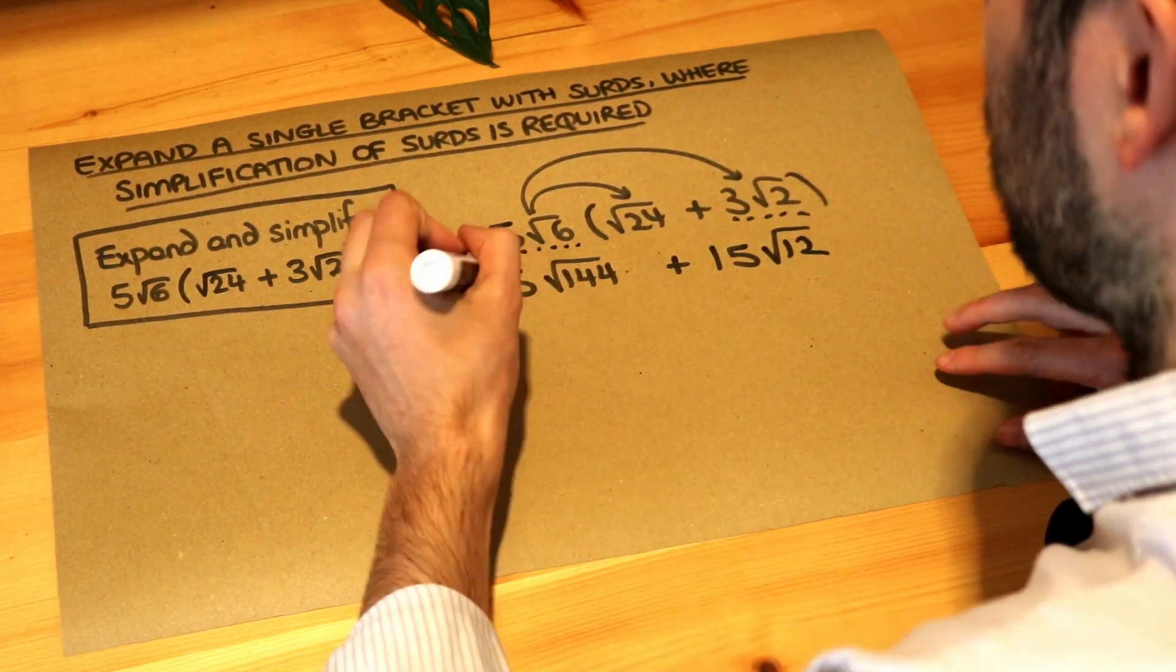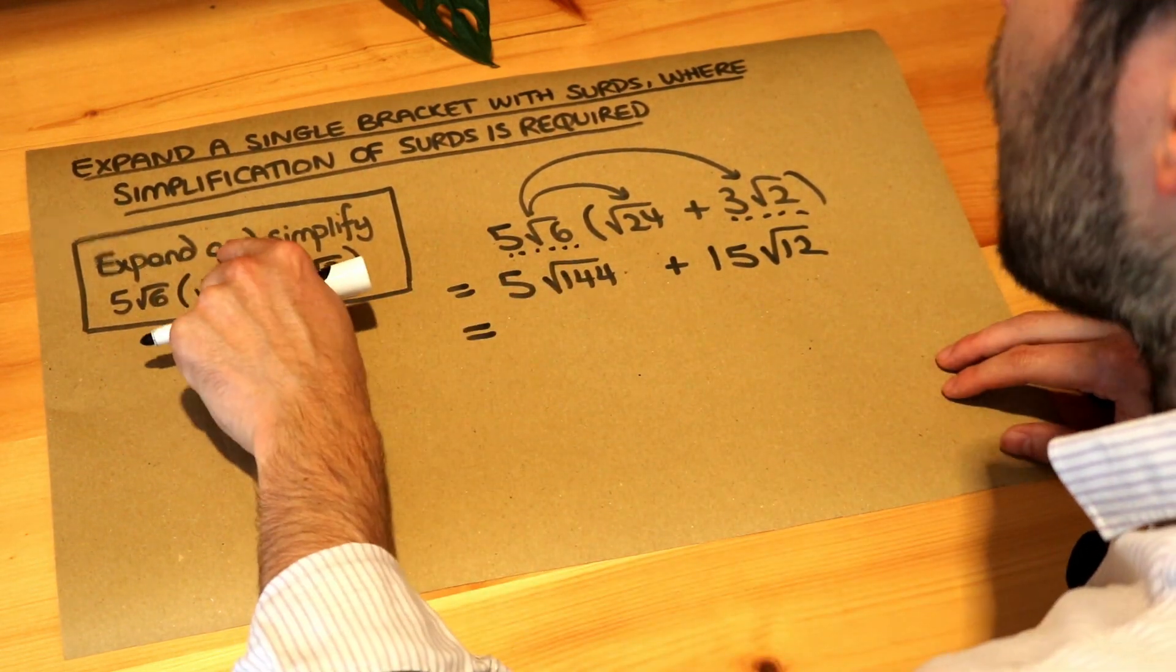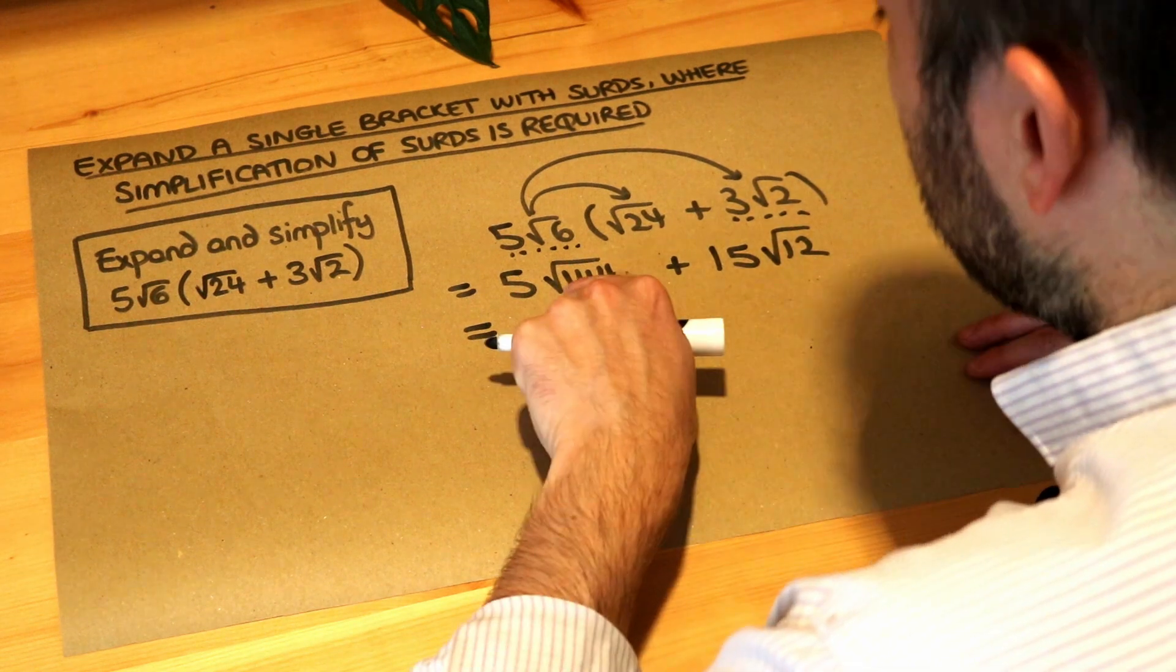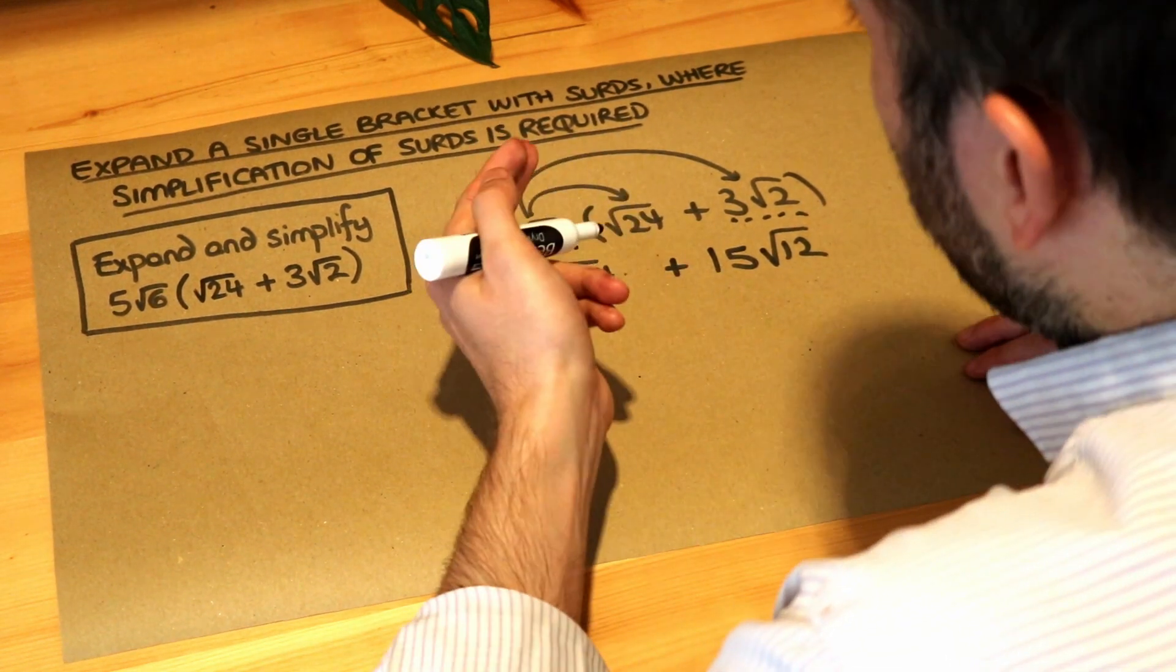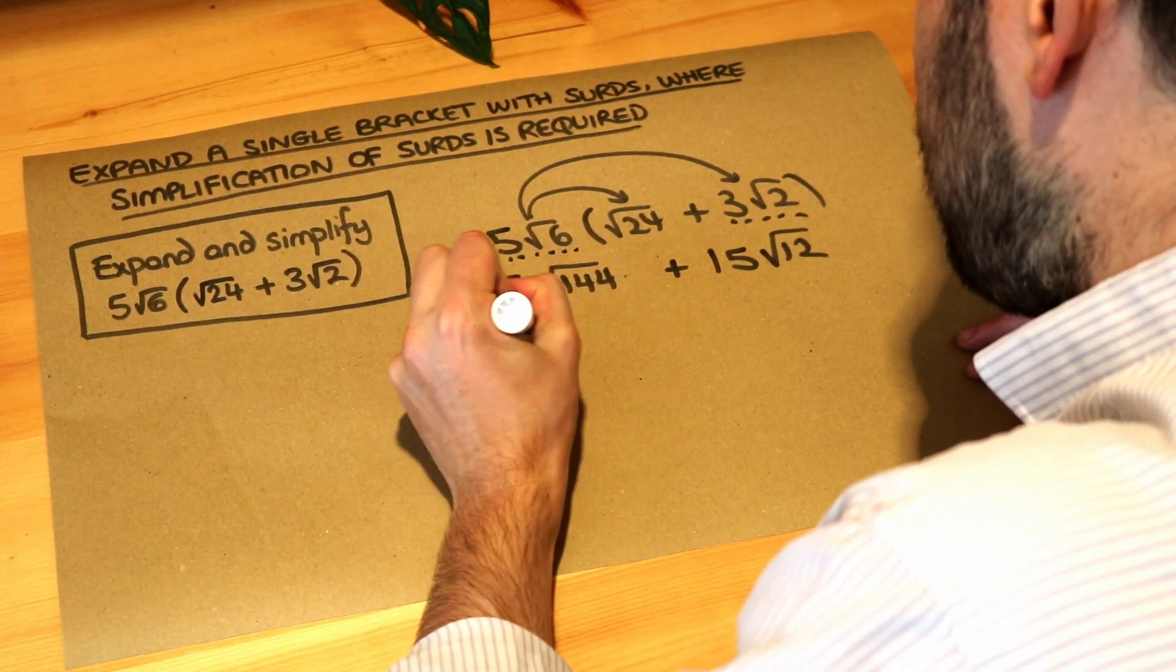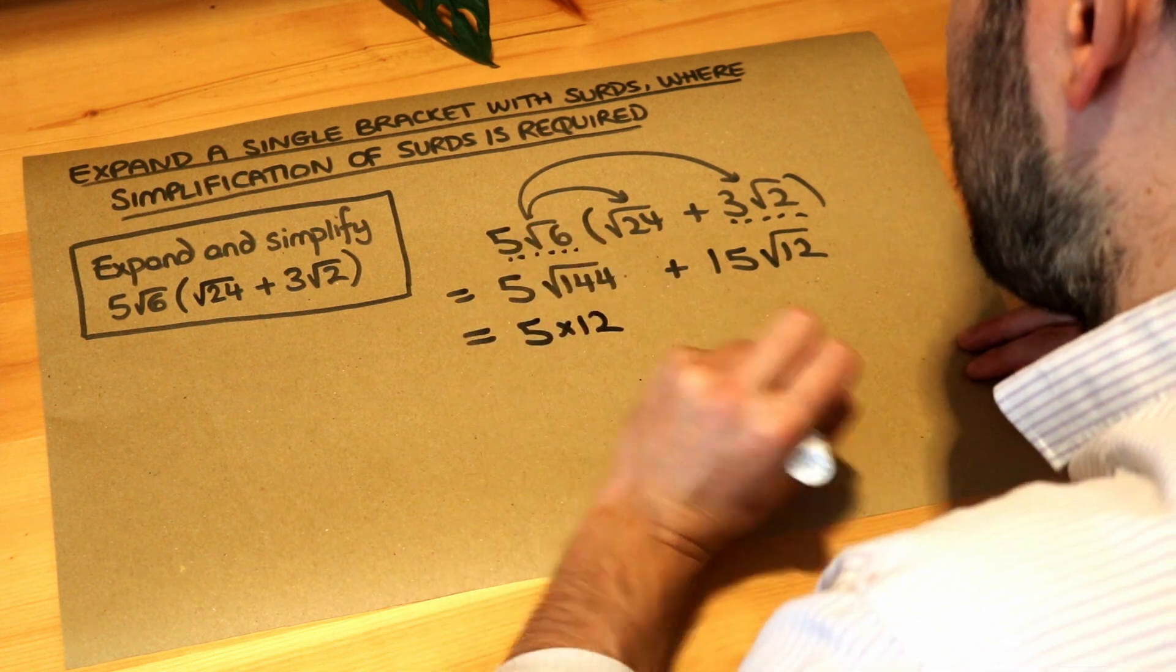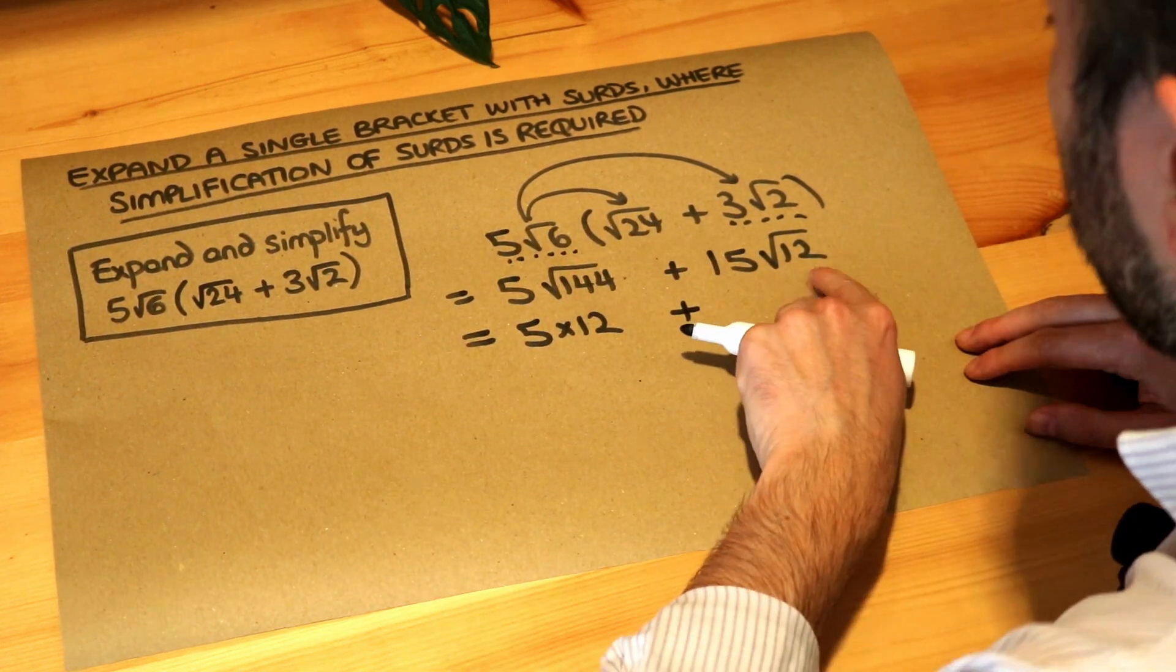We're nearly done, it's just we need to simplify in order to get the final answer. We need to expand and simplify. Now the square root of 144, well 144 is a square number, and the square root of 144 is just 12. So we've got 5 times by 12, we'll simplify that in a second.